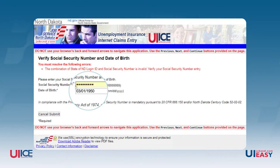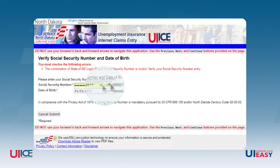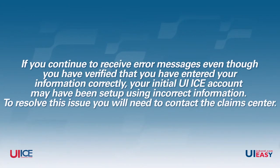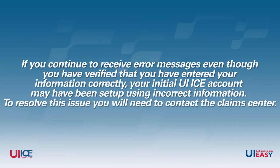Here is a helpful hint to verify if the number you entered in the Social Security number field is correct. If your browser contains a reveal button, click the button and hold it down so you can see the numbers you typed. If you continue to receive error messages even though you have verified that you have entered your information correctly, your initial UIICE account may have been set up using incorrect information. To resolve this issue, you will need to contact the Claim Center.